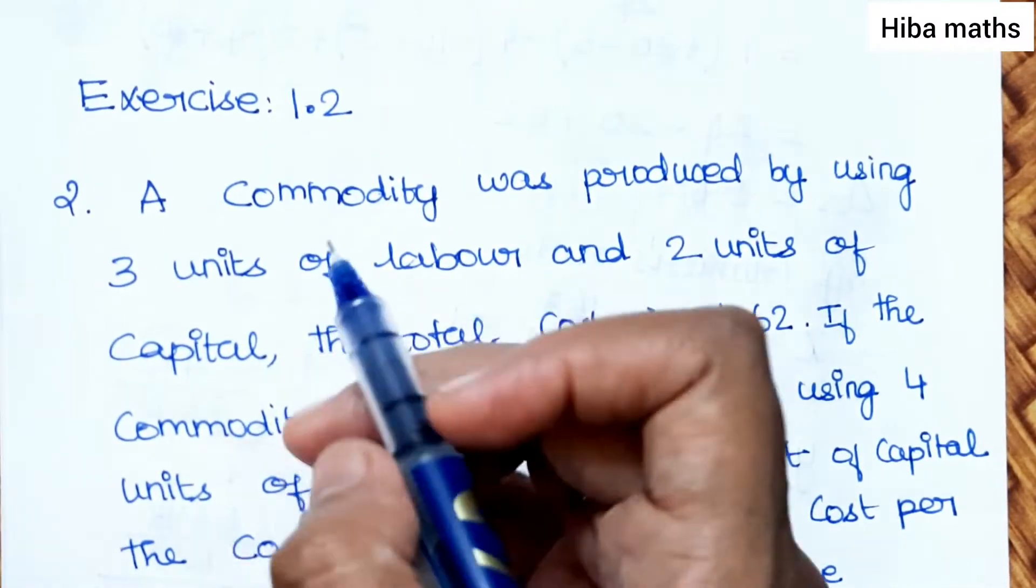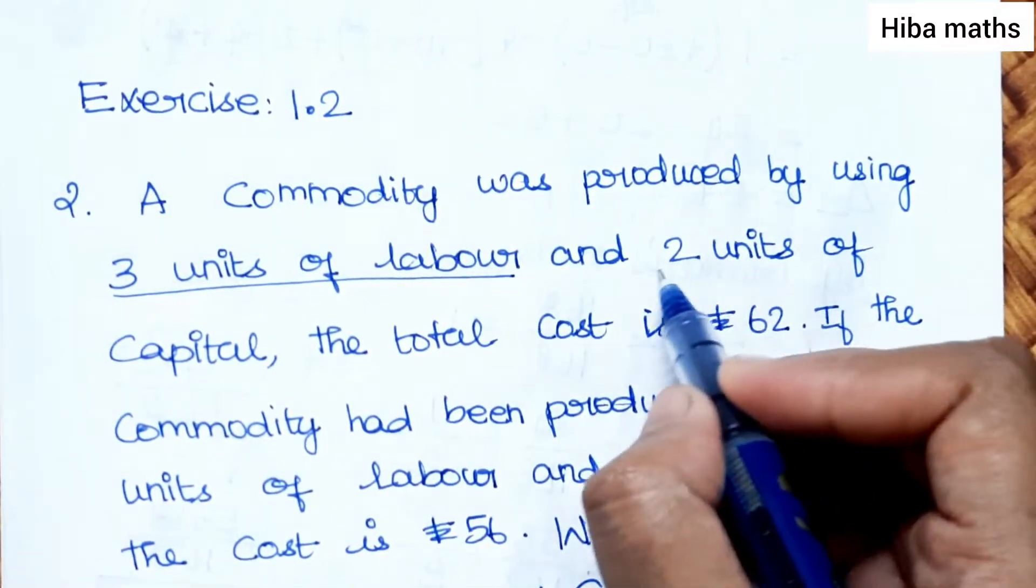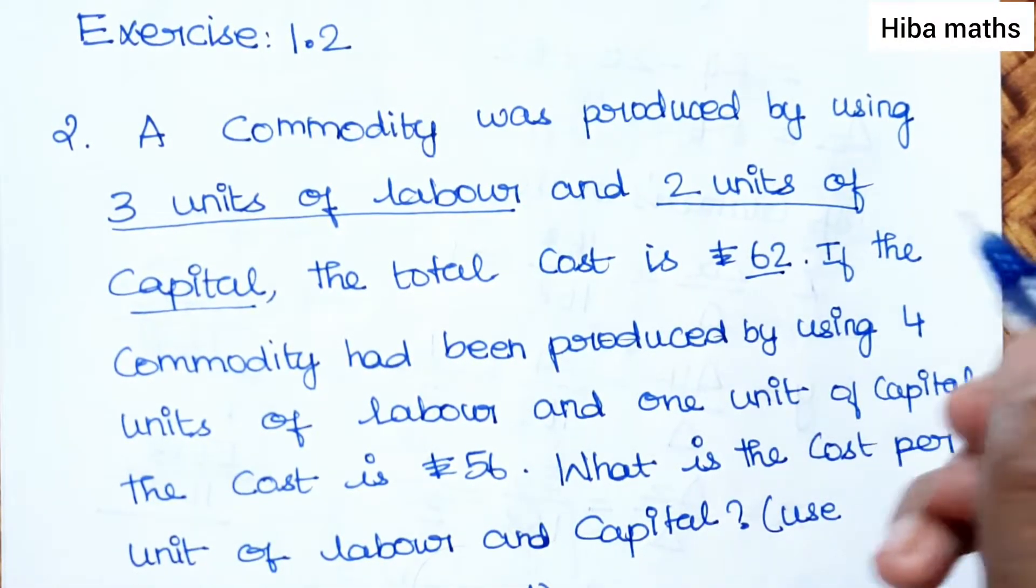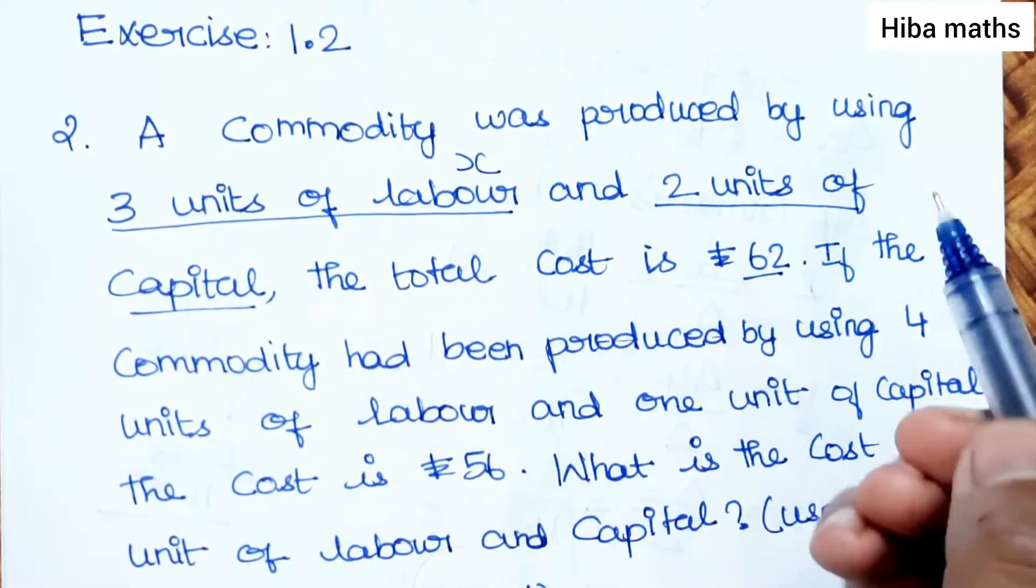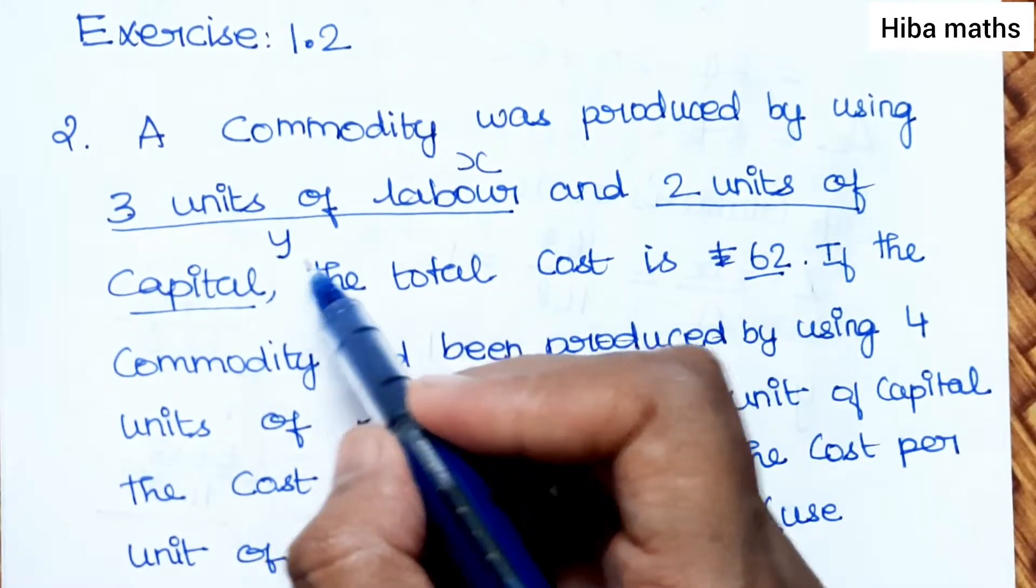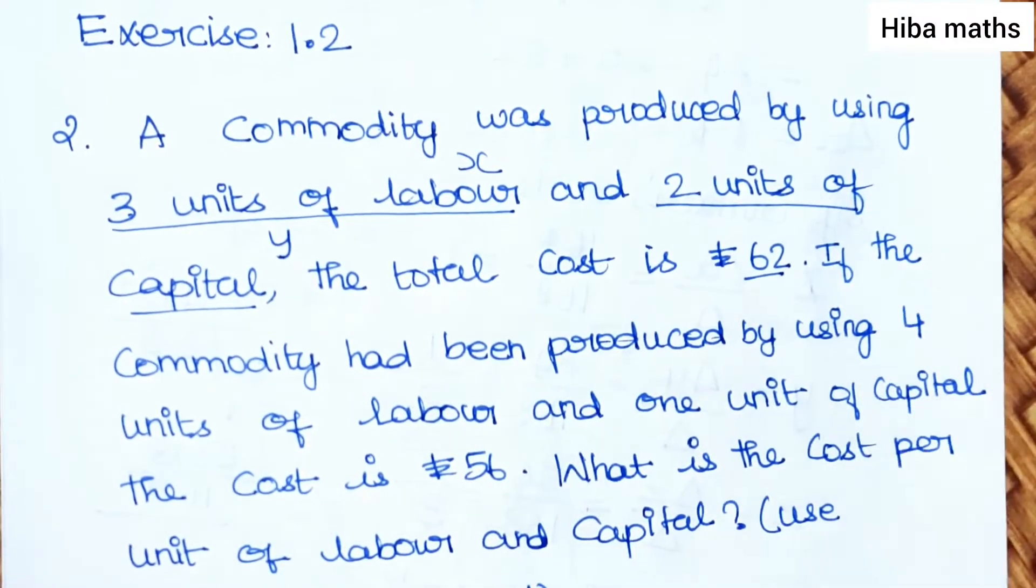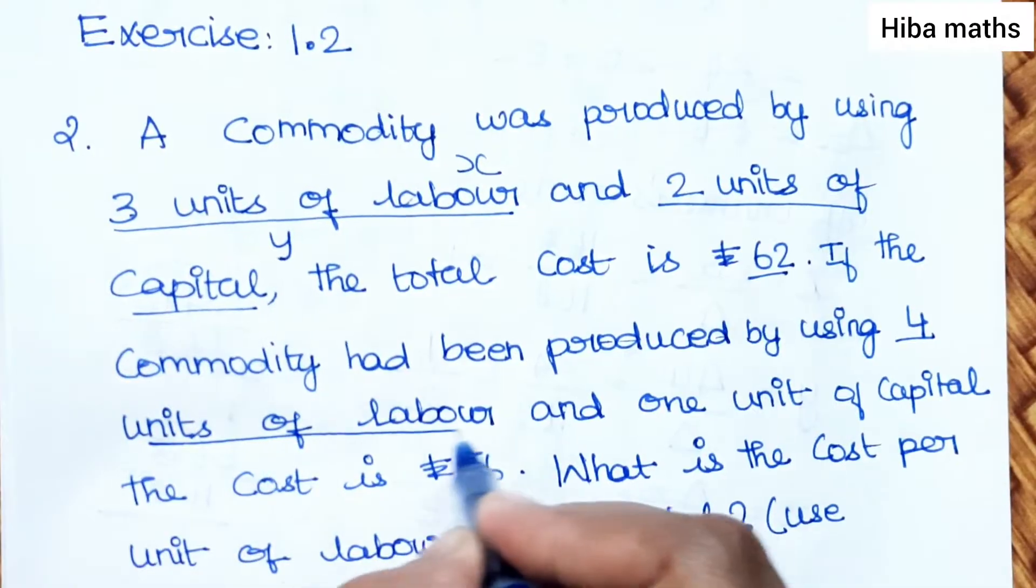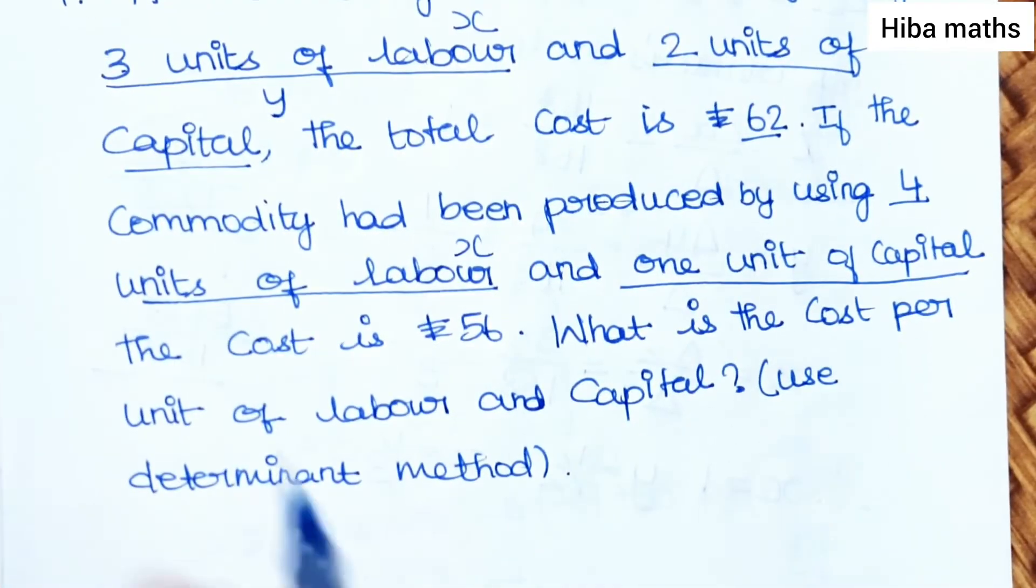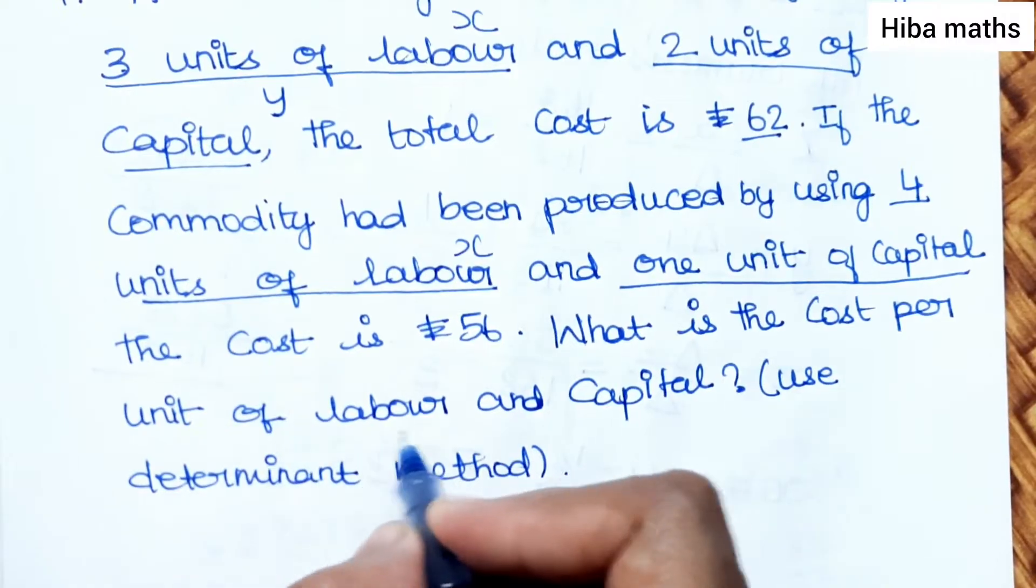A commodity was produced by using 3 units of labour and 2 units of capital. The total cost is 62. If the commodity had been produced by using 4 units of labour and 1 unit of capital, the cost is 56. What is the cost per unit of labour and capital?